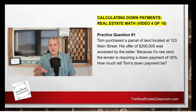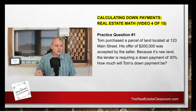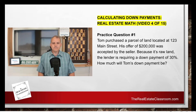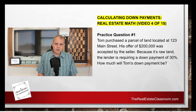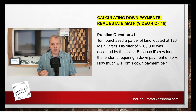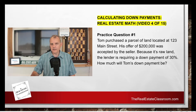Let's look at a couple of different practice test questions that you may see. I want to give you the format at which it may be asked, because that may be important too. Practice question number one: Tom purchased a parcel of land located at 123 Main Street. His offer of $200,000 was accepted by the seller. Because it's raw land, the lender is requiring a 30% down payment. How much will Tom's down payment be?